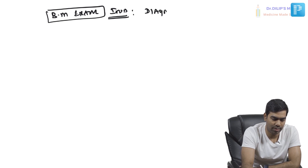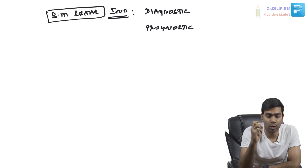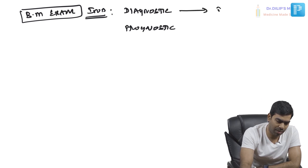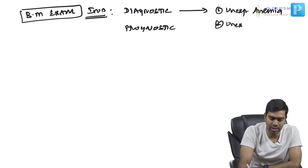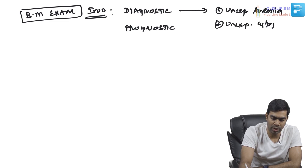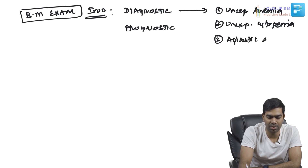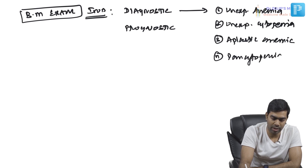Indications can be either diagnostic or prognostic. For diagnostic indications, there are many. From the time you diagnose any unexplained anemia — if you don't know the cause of anemia — you can use bone marrow examination. Or for any unexplained cytopenia including thrombocytopenia, or if you think about aplastic anemia, or if the patient has a pancytopenia, in those conditions you can do a bone marrow examination.